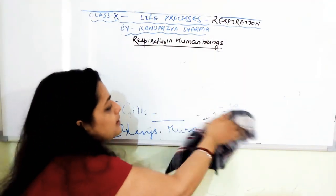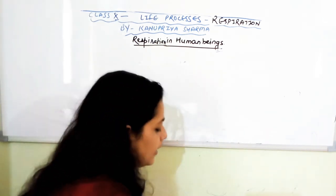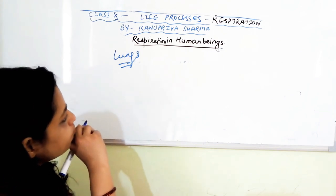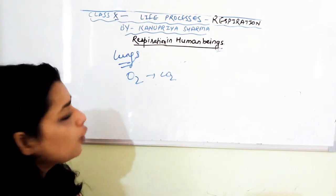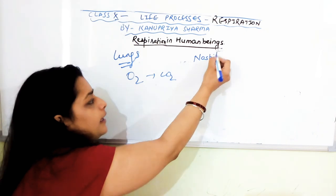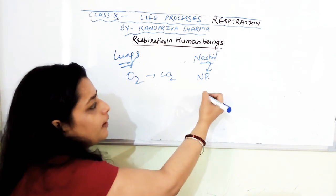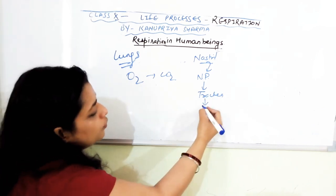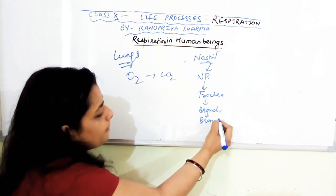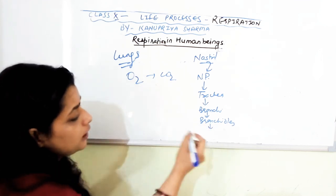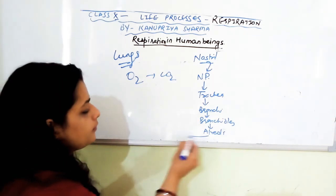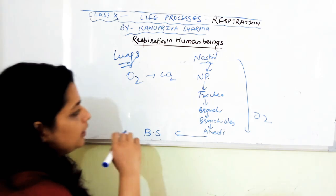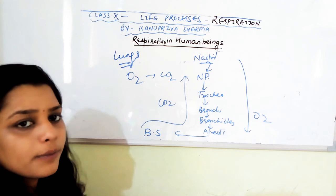Now we'll talk about the respiratory system of a more complex organism — human beings. Our main respiratory organ is the lung; we take in oxygen and release CO2. The air moves from the nostril to the nasal passage, then into the trachea, from the trachea to the bronchi, then into the bronchioles, then to the alveoli, and from there it enters the bloodstream. The exit of CO2 also takes place in a similar manner in reverse.